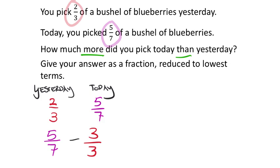If you use the wrong operation, you'd see the value is too big. Always look over your answer and check: does it make sense in this context? Negatives should not be happening here. So we're going to take five-sevenths and subtract two-thirds, which tells us how much more was picked today than yesterday.